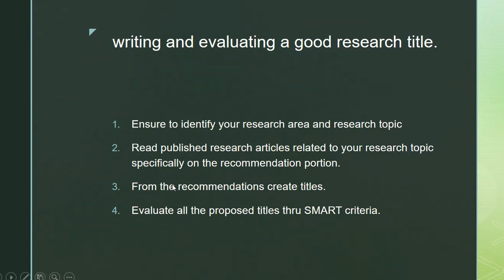Here is the summary of the process in writing and evaluating a good research title. Number 1: ensure to identify your research area and research topic. Number 2: read published research articles related to your research topic, specifically the recommendation portion. Number 3: from the recommendations, create titles. Number 4: evaluate all proposed titles through SMART criteria.